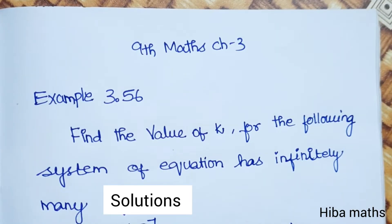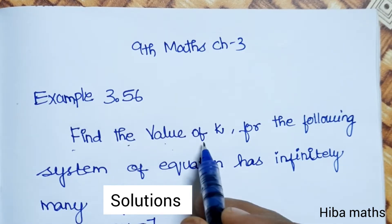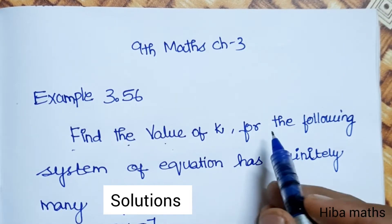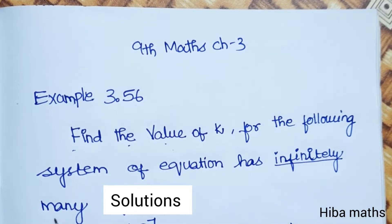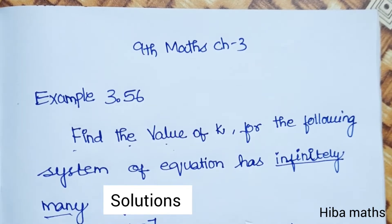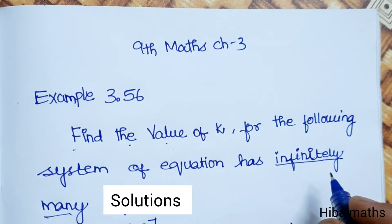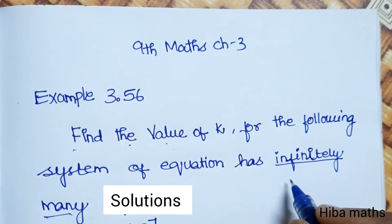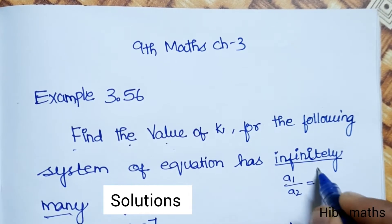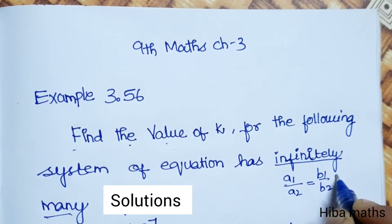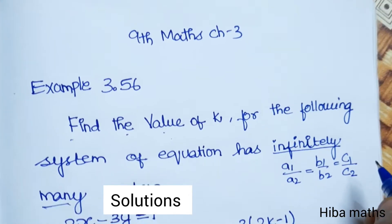Hello students, welcome to Heba Max 9 Standard Max, Chapter 3, Example 3.56. Find the value of k for the following system of equations that has infinitely many solutions. The condition for infinitely many solutions is: a1/a2 = b1/b2 = c1/c2.